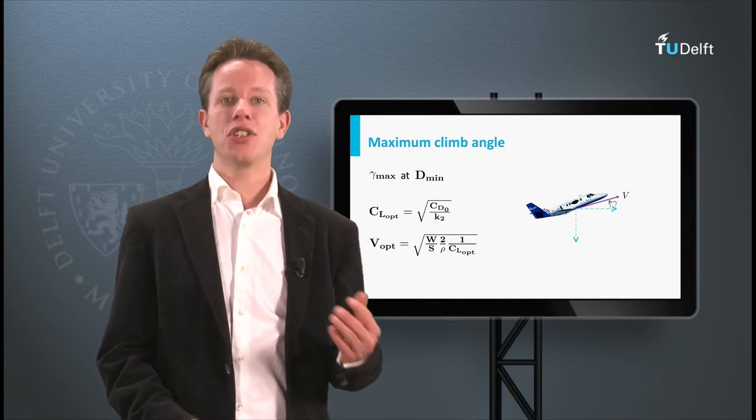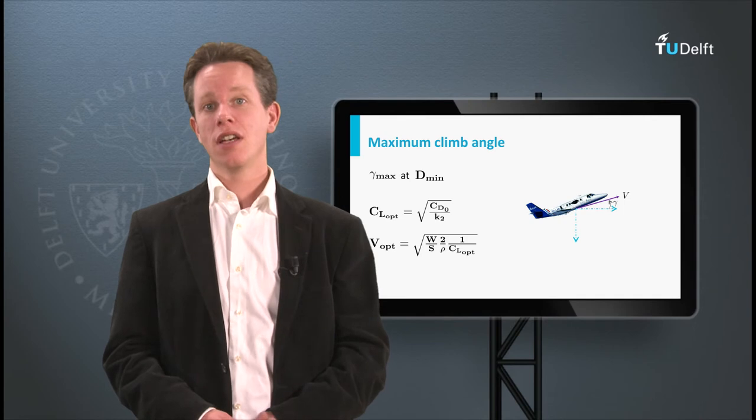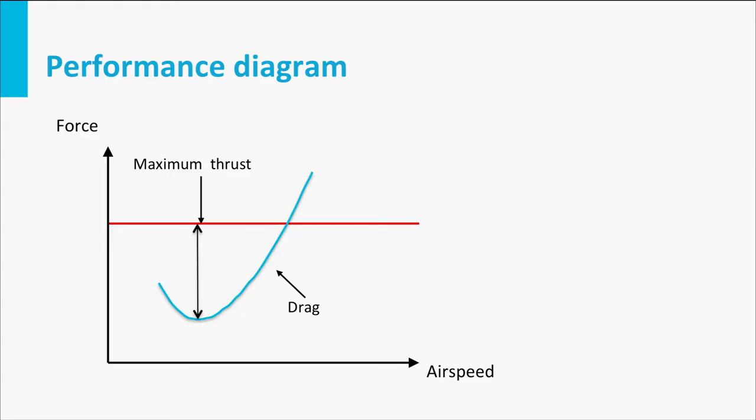In case of an idealized jet aircraft with constant maximum thrust as a function of airspeed, this situation can be solved analytically. In that idealized situation, the maximum excess thrust is present at the minimum drag condition.